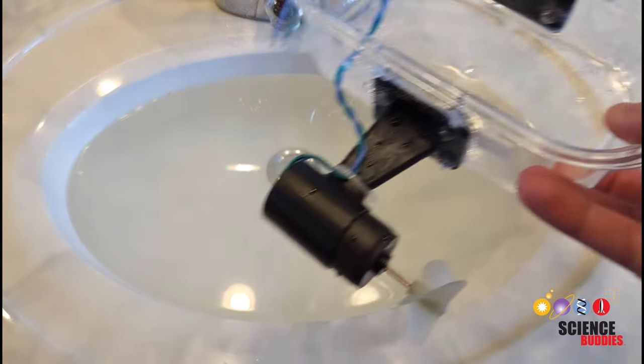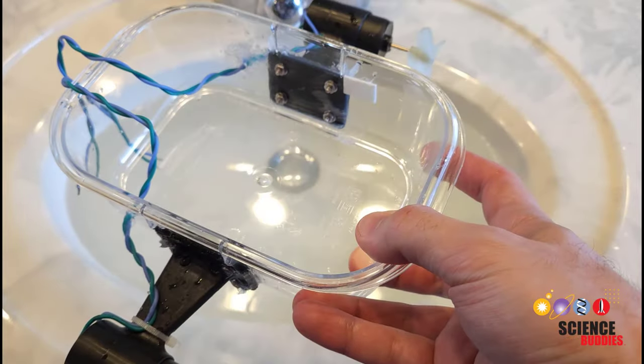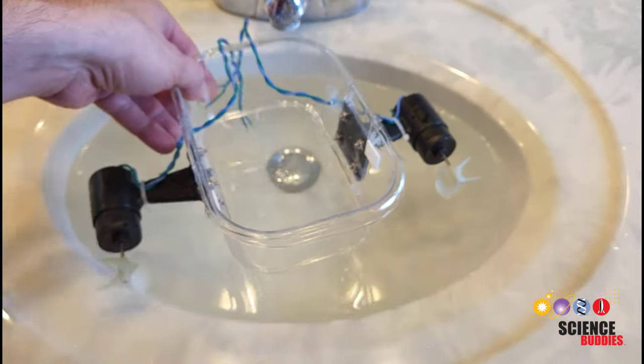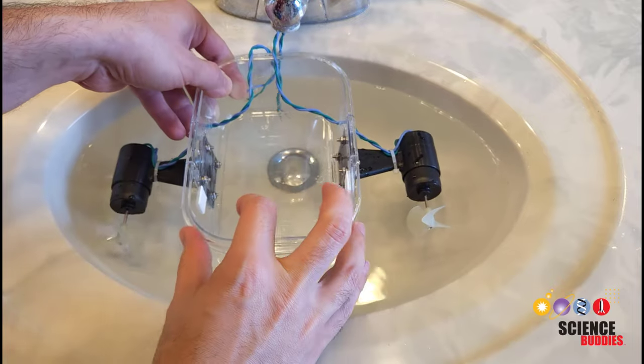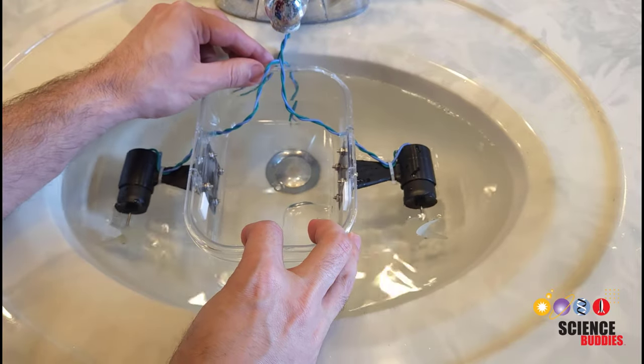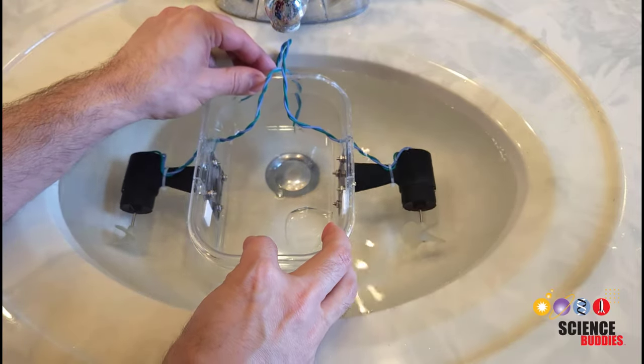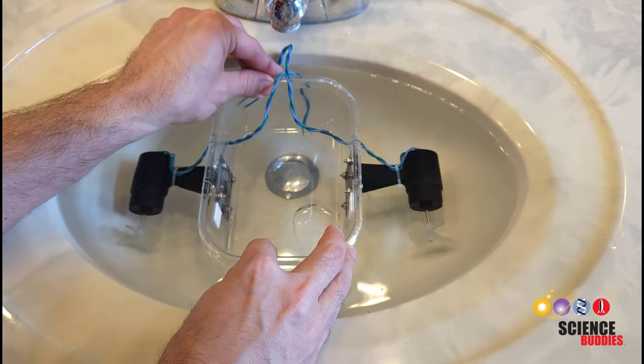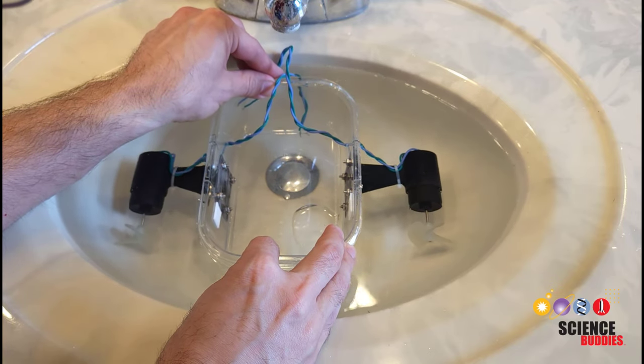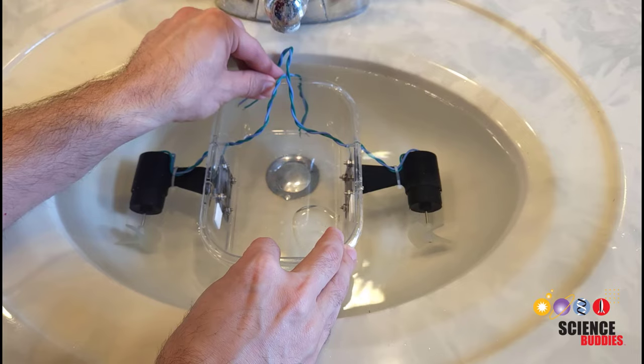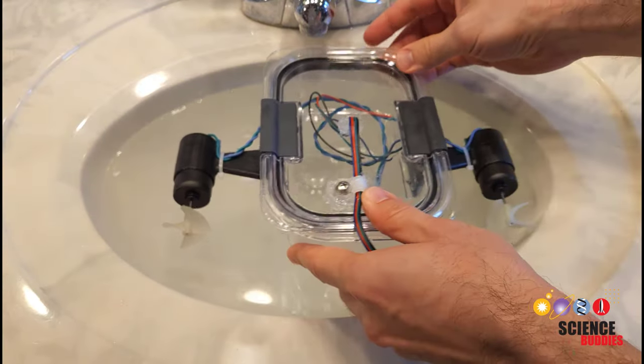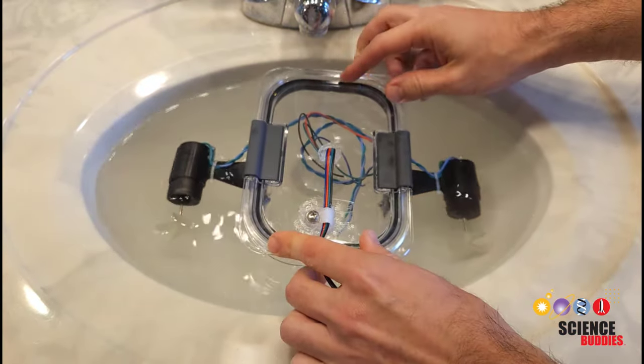Once the sealant has dried completely, remove the Arduino and any electronics, then slowly submerge the container without the lid in something like a sink or a bathtub. Here, I am just watching those holes on the side walls of the container for the motor bolts and wires to see if I have any leaks. Once you've confirmed that you don't have any leaks in the walls of the container, you can move on to testing with the lid.